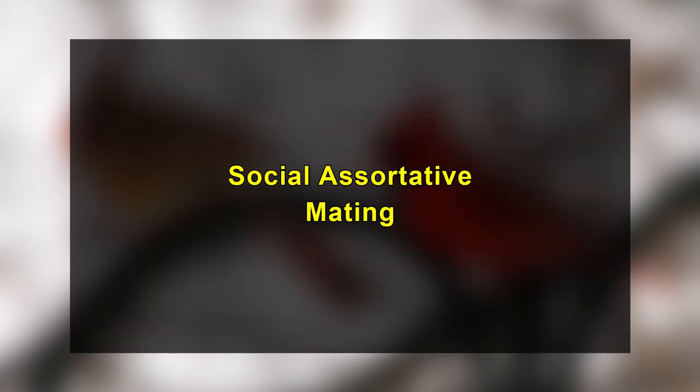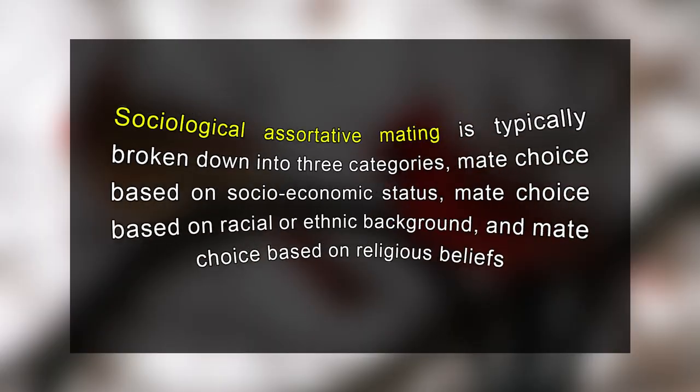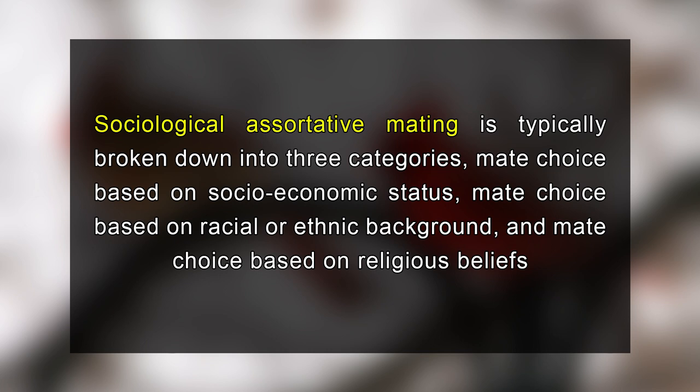Let's now talk about social assortative mating. In addition to genetic assortative mating, humans also demonstrate patterns of assortative mating based on sociological factors. Sociological assortative mating is typically broken down into three categories: mate choice based on socio-economic status, mate choice based on racial or ethnic background, and mate choice based on religious beliefs.